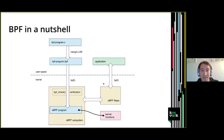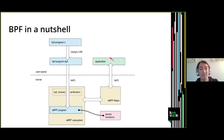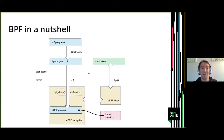The BPF program can call kernel functions via BPF helper functions and interact with BPF maps. When executing, it interacts with the user space application only through the BPF maps — that's the communication mechanism to retrieve information from the kernel into the tracing application.